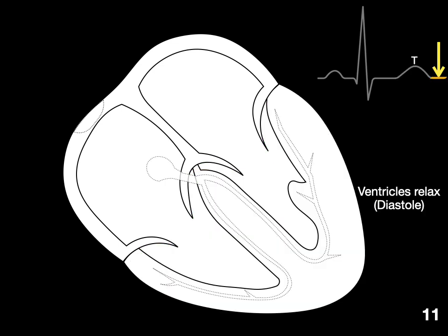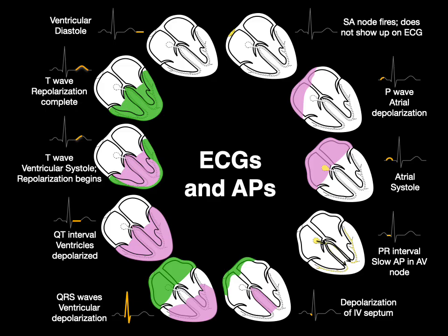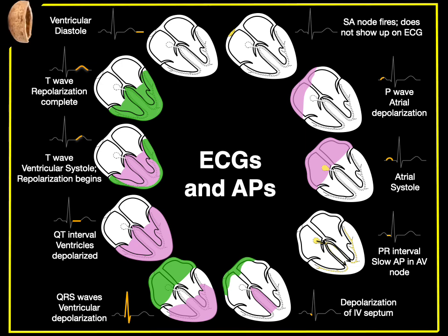And now, the ventricles relax, there's diastole. And that, my friends, are ECGs and action potentials in a nutshell.